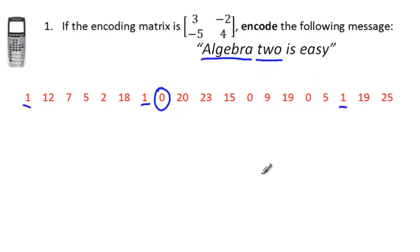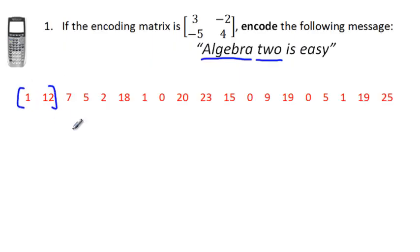Now we take these numbers two at a time. So we take 1 and 12, and multiply them by the matrix: 3, -2, -5, 4. When we multiply those together we'll get two new numbers. Let me grab the calculator.